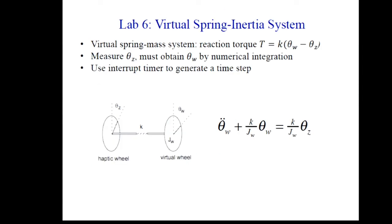One of our virtual systems is a virtual wheel — a haptic wheel connected to a virtual spring and virtual inertia. You turn the haptic wheel, set it in motion, and the virtual wheel satisfies the differential equation of a harmonic oscillator, so you feel an oscillatory reaction torque at a specified frequency and amplitude. Of course you have to numerically integrate that differential equation in real time.